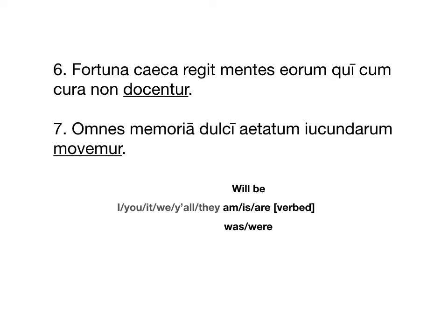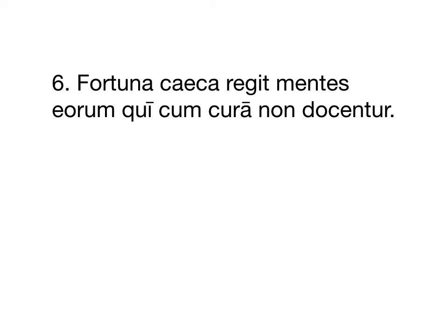So remember, these passive verbs — Docentur and Movemur both are — are going to be translated as am, is, or are verbed if it's present, which both of these are. It'll be will be verbed if it's future, and then was or were verbed if it's imperfect. All right, so hopefully these went pretty well.